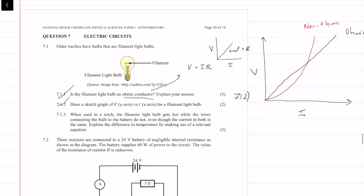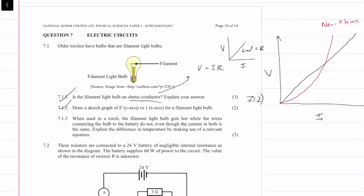We get five marks for all of that. Question 7.1.3: when used in a torch, the filament light bulb gets hot while the wires connected to the bulb do not, even though the current in both is the same. Explain the difference in temperature using relevant equations.